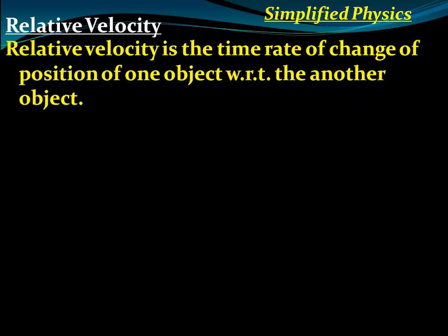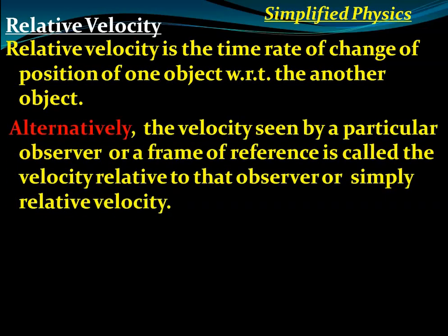Relative velocity is simply the rate of change of position of one object with respect to another object. Let's suppose two buses are traveling in the same direction with the same velocity in a straight line. A person is standing on the bus stand — what velocity does that observer see? The velocity seen by the observer is simply the relative velocity with respect to that observer.